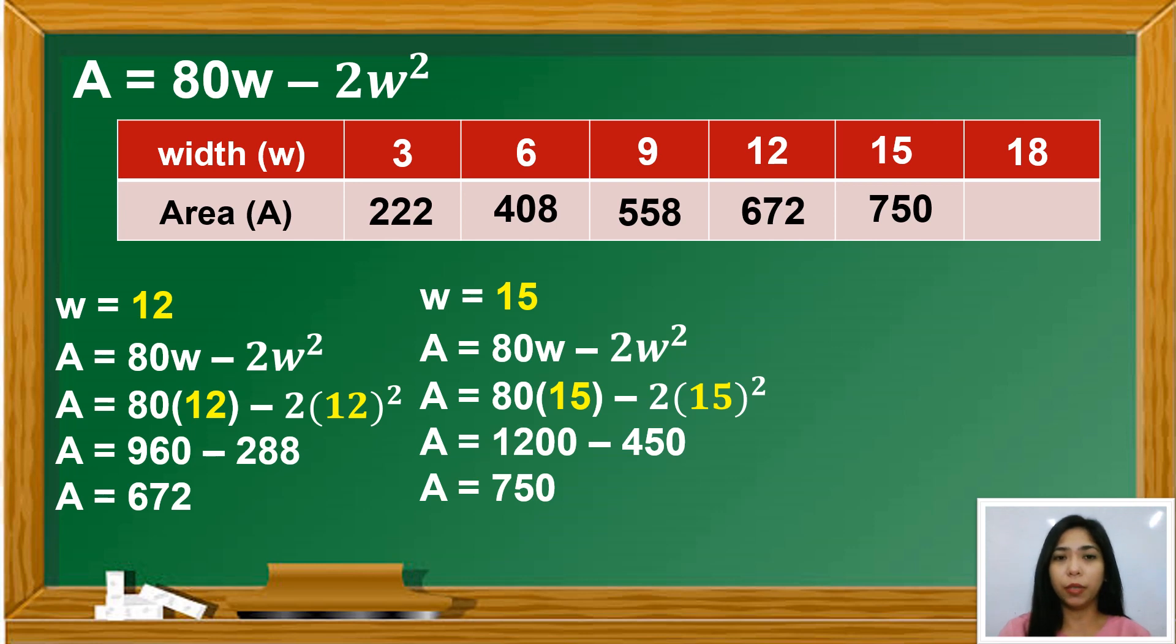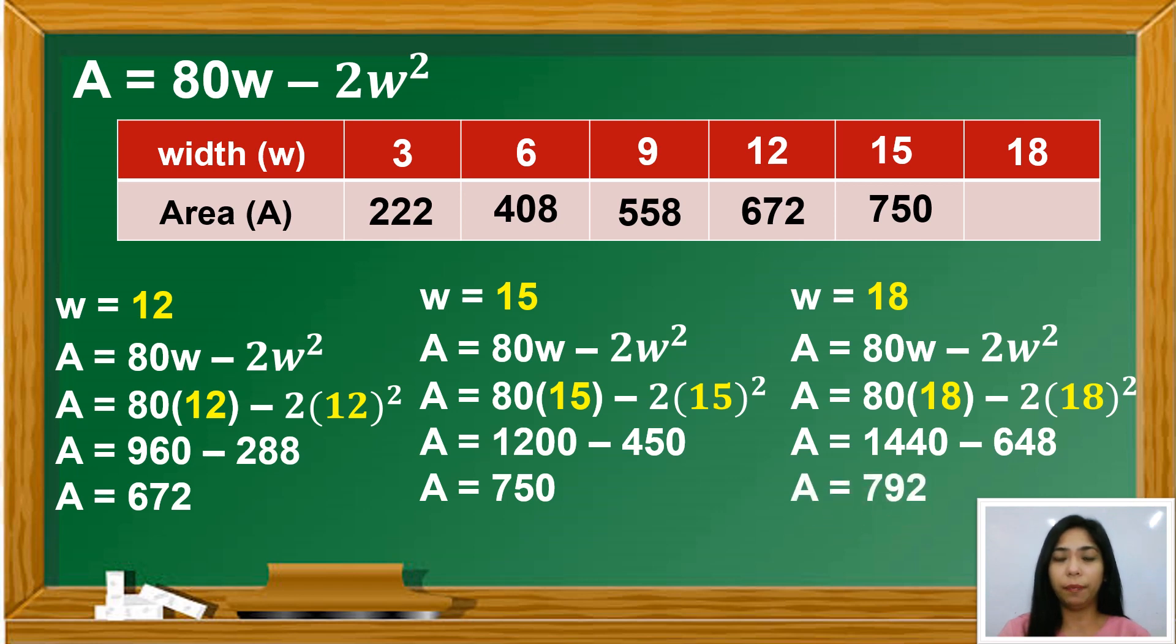If W equals 18, then we have A equals 80 times 18 minus 2 times 18 squared. So we have 1,440 minus 648. Therefore, A equals 792.